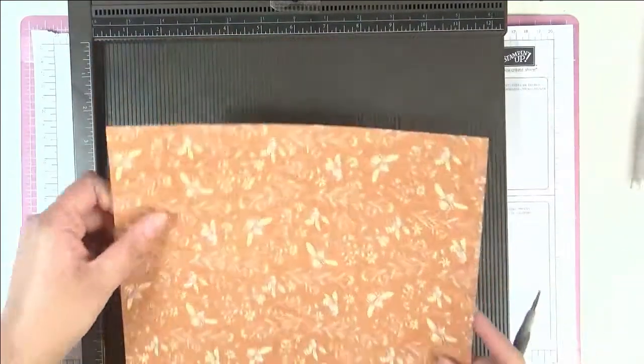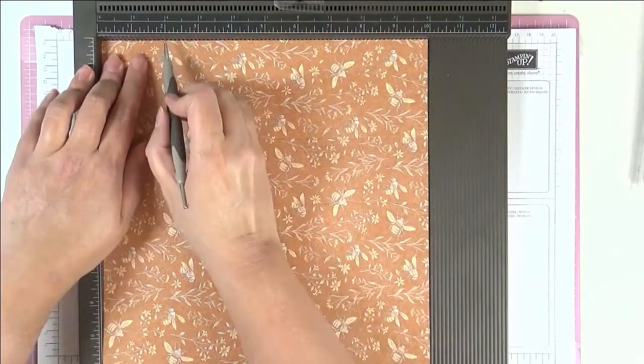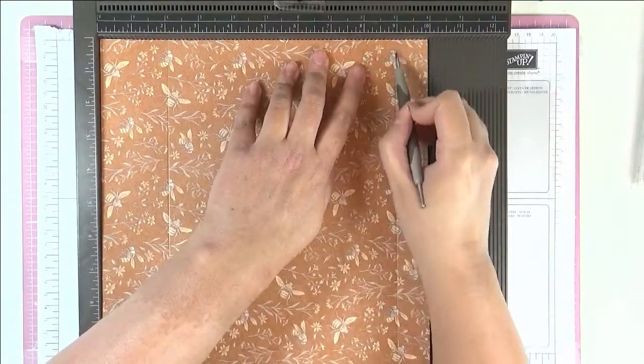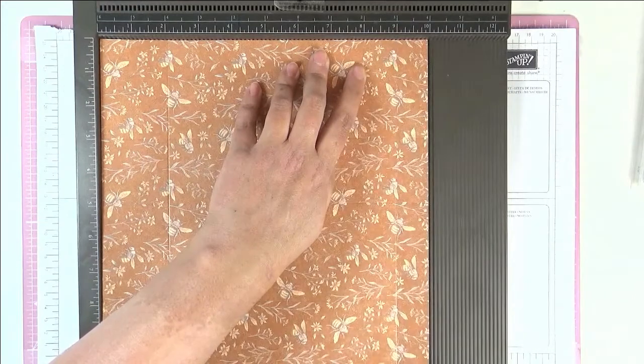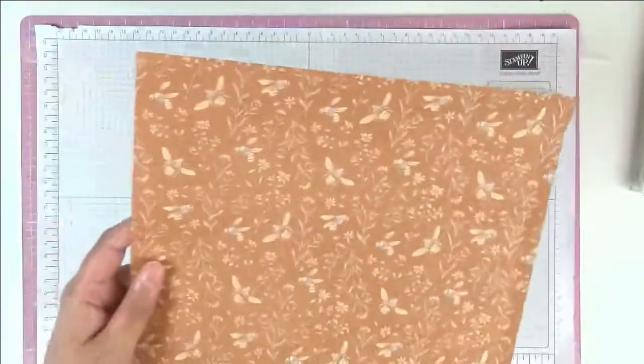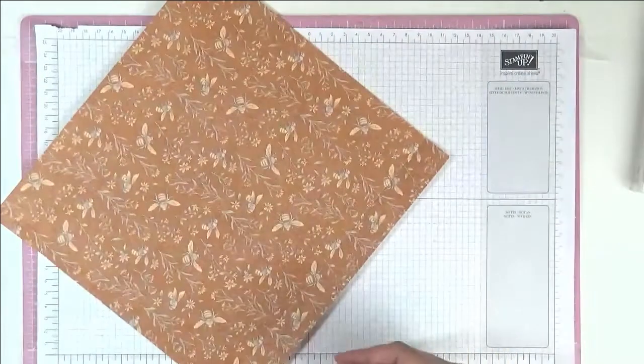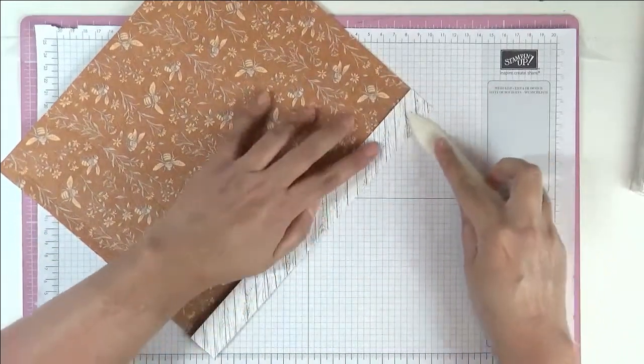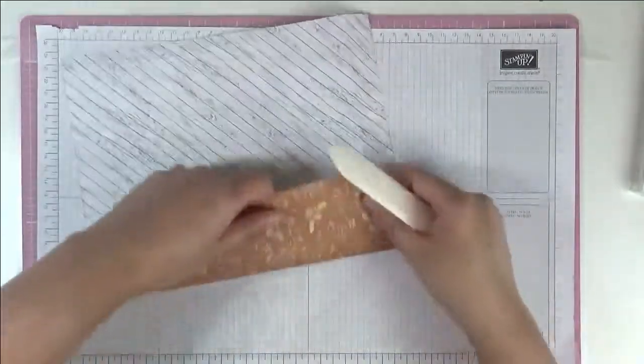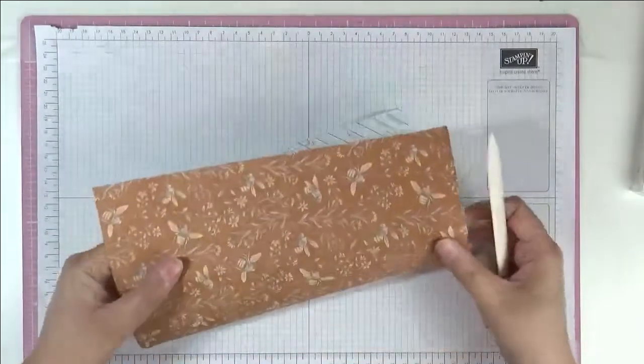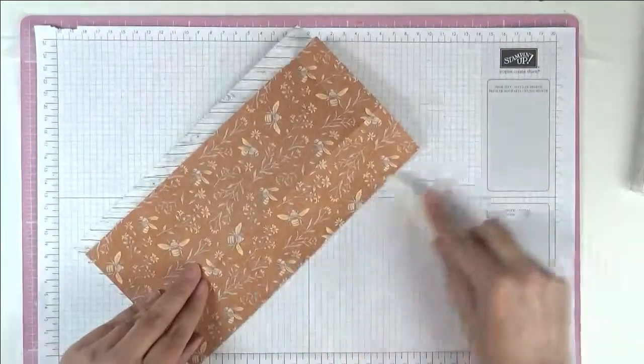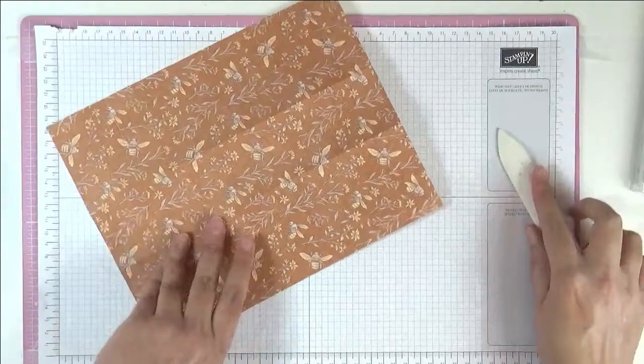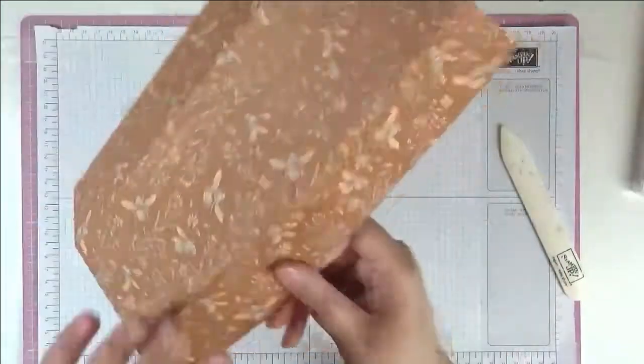Turn it around to the ten inch side and you're gonna score at two inches and again at nine inches. So that's just burnish on all our score lines, that means fold them. So this one inch one at the top is gonna be a fold over piece, so let's do that and then I'm just gonna do the rest. That's a big piece of paper, just take your time to find all of those score lines.